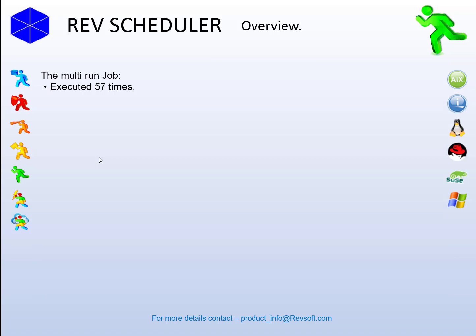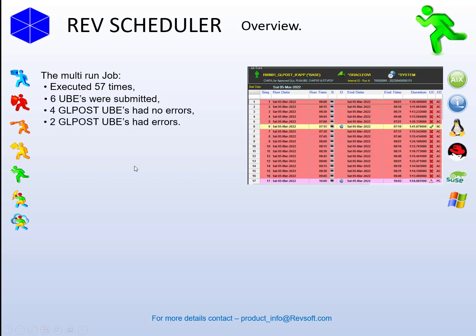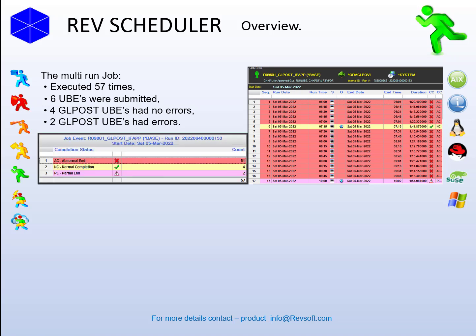Now we've run this for a whole day. Let's check the multi-run statistics. The job executed 57 times. The GL post was submitted only six times instead of 57. Four times the GL post UBEs had no errors; two times the GL post had errors. We saved 51 submissions of GL post UBEs by using this mechanism. We can also see the details in the multi-run summary form: 51 times there were no GL post UBEs submitted, only six times. The GL batches used were created via orchestration processes by the team at ERP1, and those processes were executed as multi-run jobs in RevScheduler using the RJ run orc command.